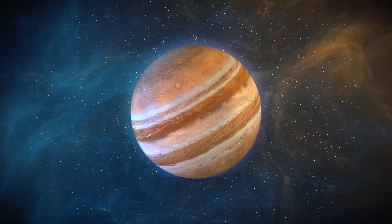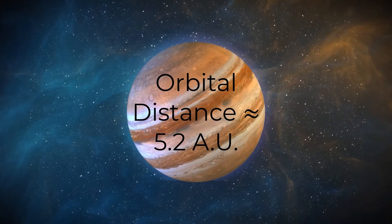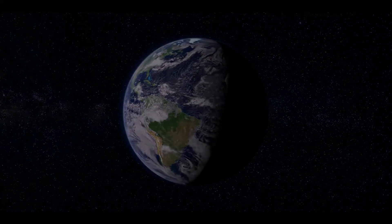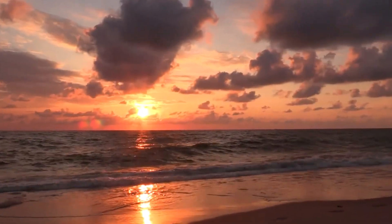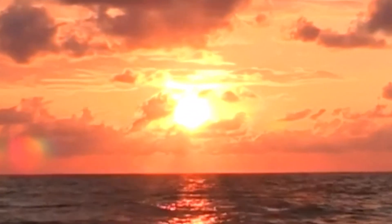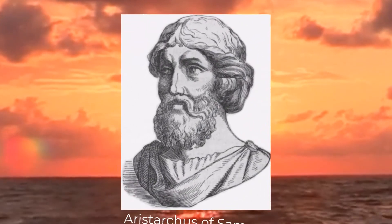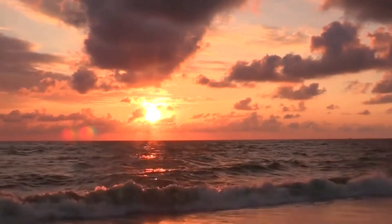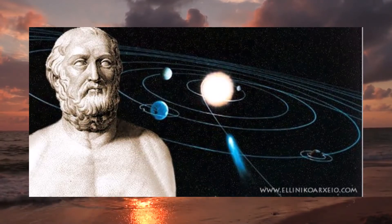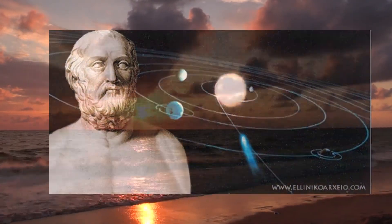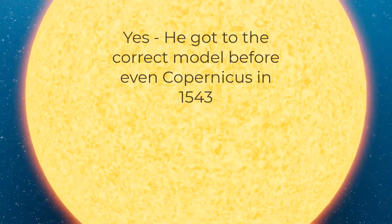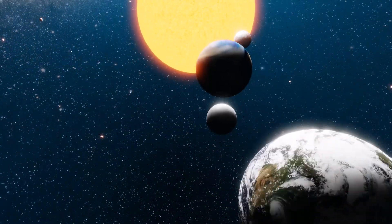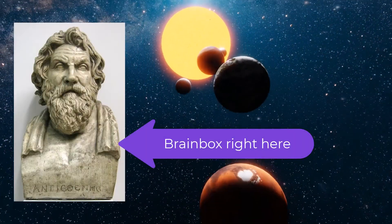For instance, Jupiter orbits the Sun at approximately 5.2 AU, and of course Earth orbits at 1 AU on average over the course of a year. The first person to try and derive the value of the distance to the Sun in recorded history was Aristarchus in the 3rd century BC, around 2,500 years ago. Aristarchus was an ancient Greek astronomer and mathematician, and was also the first recorded person to suggest a heliocentric model for the solar system — that being the Sun is at the centre with the planets orbiting it — so he was quite the intelligent lad for his time to say the least.